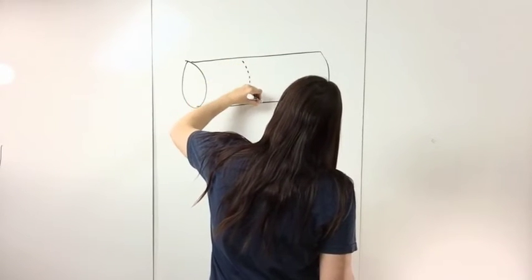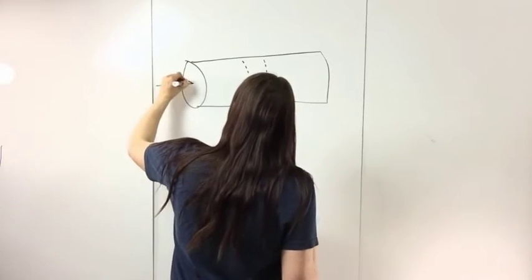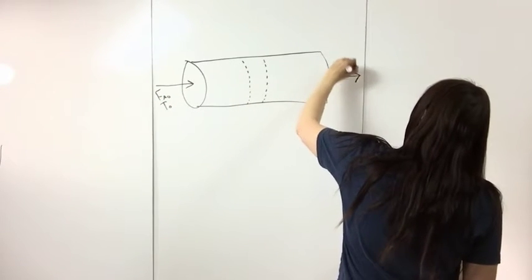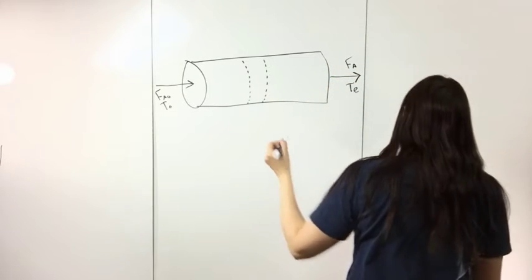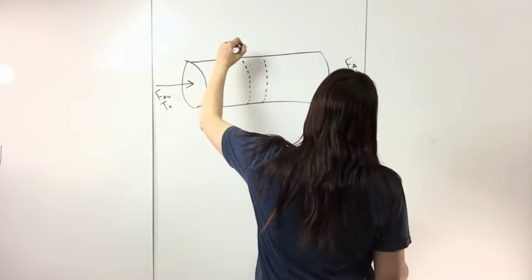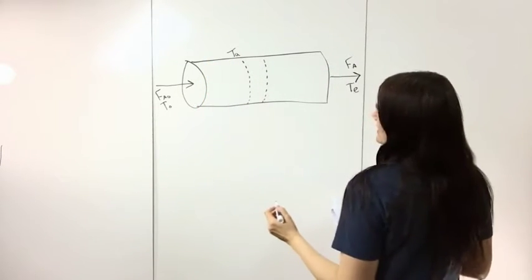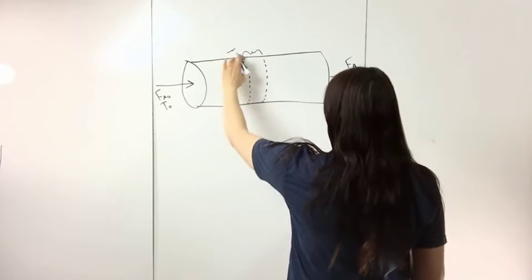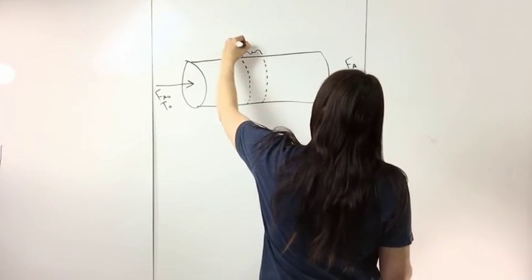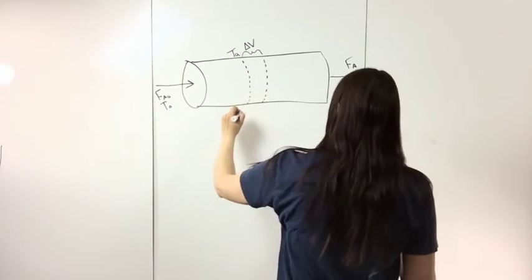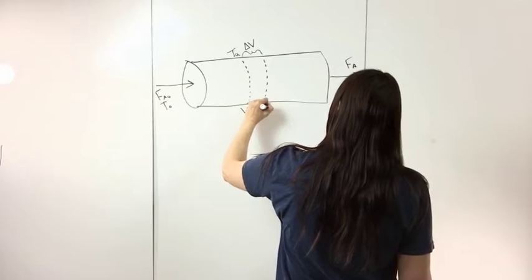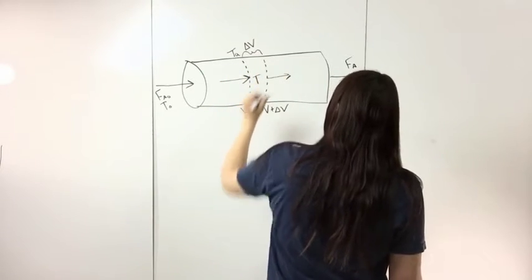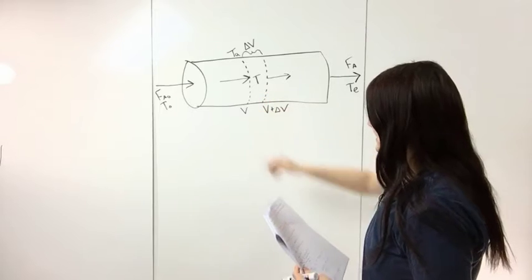We want to look at one section of the tubular reactor. You have flow in — some F_A0 at some temperature — and flow out at some temperature. There's an ambient temperature T_A representing the temperature in the heat or cooling jacket outside the reactor. The section spans from V to V plus delta V.